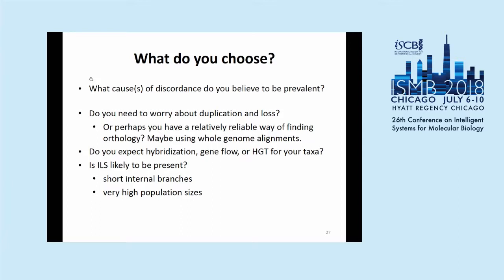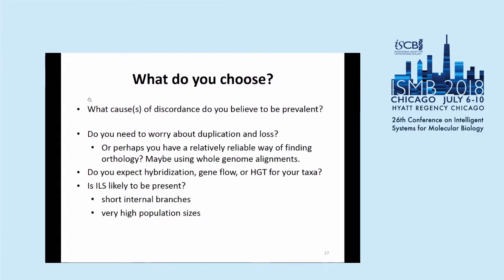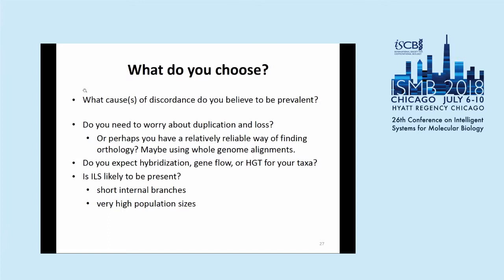The answer depends on your question and your set of species. The first question you should ask yourself is: what is the cause of discordance I have to worry about most? If you're working on plants, maybe gene duplication and loss is most prevalent. If you're working on birds, they have a lot of short branches in the species tree, so incomplete lineage sorting is likely what you need to worry about most. If you're working on bacteria, you cannot ignore horizontal gene transfer. Ideally, we would have a model that includes all forms of discordance and let the model figure it out, but right now we don't have such approaches.